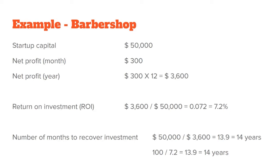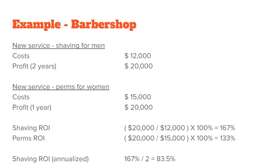This allows us to calculate return on investment (ROI) by taking net profit divided by the total amount we invested. Our barbershop earns 7.2% ROI: $3,600 annual net profit ÷ $50,000 startup capital = 7.2%. This helps in two ways: first, it tells you how long to keep the business running before earning back all your money. For the barbershop, $50,000 ÷ $3,600 = about 14 years. Alternatively, 100 ÷ 7.2 gives you exactly the same result of 14 years.